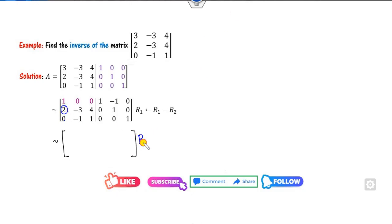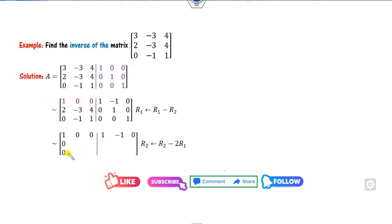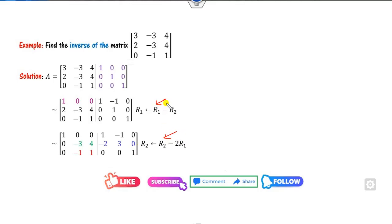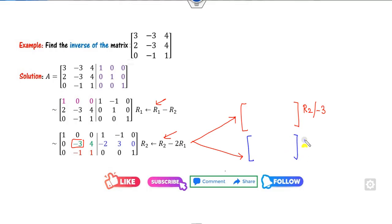The next target is to make the element below the first pivot zero — apply R2 minus 2R1. The first row stays as (1, minus 1, 0) and so on. The last row has no operation, so it remains as before. For R2 minus 2R1: 0 minus 2 = minus 2; 1 plus 2 = 3; 0 plus 0 = 0 for the identity side. Make sure to write these operations in your examinations. The next target is to make the second diagonal element equal to 1 — again two choices: divide R2 by minus 3, or interchange R2 and R3.